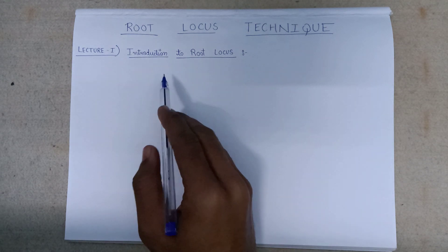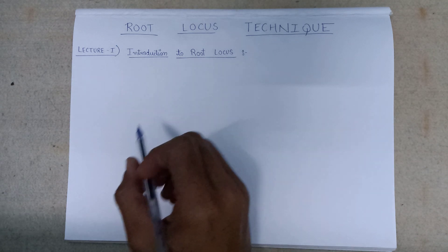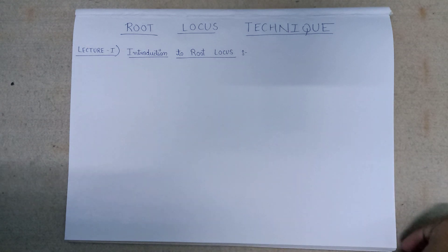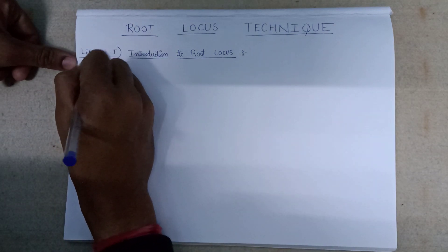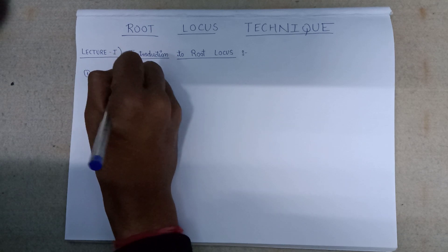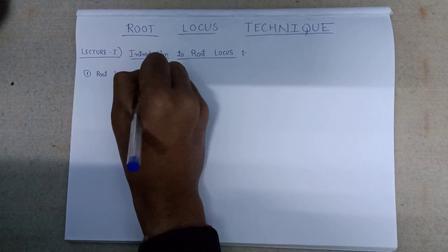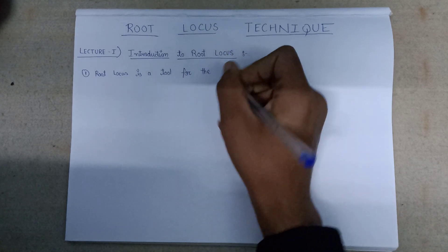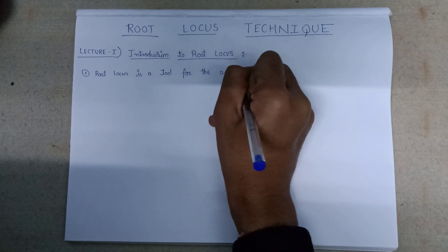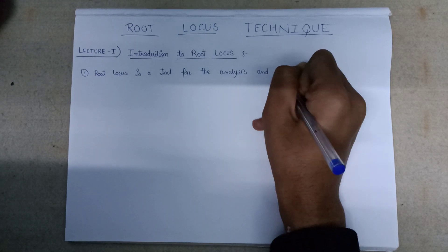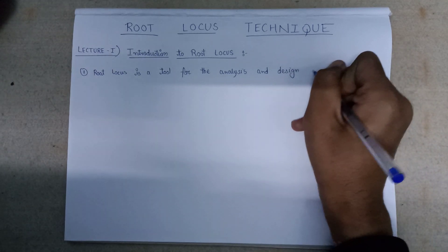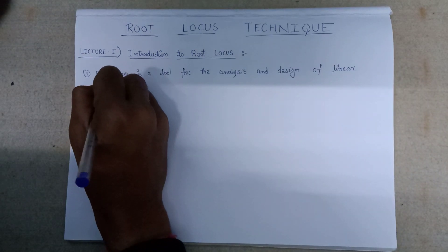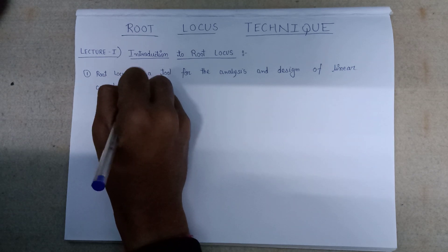So let's discuss students what Root Locus exactly is. Root Locus is a tool for the analysis and design of linear control system. Let me write it. Root Locus is a tool for the analysis and design of linear control system.